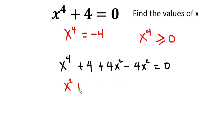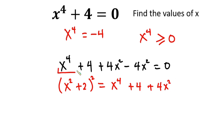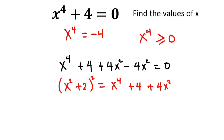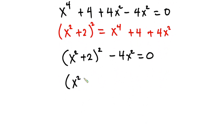Let's see: (x squared plus 2) all squared, if we expand this, gives x to the 4th power plus 4 plus 4x squared. So what we have in those three terms is the same as (x squared plus 2) squared. Therefore we replace those terms with (x squared plus 2) squared, giving us (x squared plus 2) squared minus 4x squared equals 0. We can write 4x squared as (2x) squared.